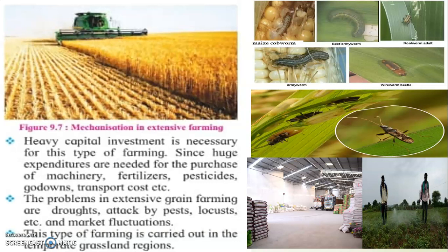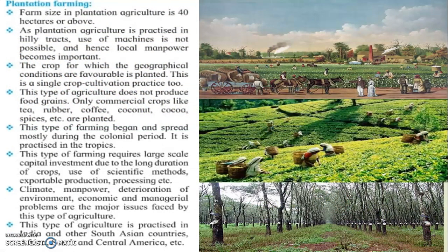Moving ahead, the next type under commercial farming is plantation farming. Plantation farming is carried out again on a larger area — 40 to 50 hectares of land. This type of farming was started during the British colonial period, when the British came to India and began establishing their colonies, starting with crops like rubber and indigo. The setting of plantations in particular regions began during this colonial period.